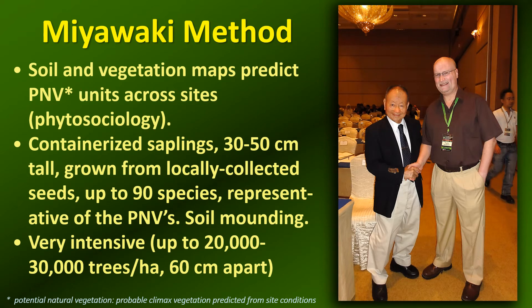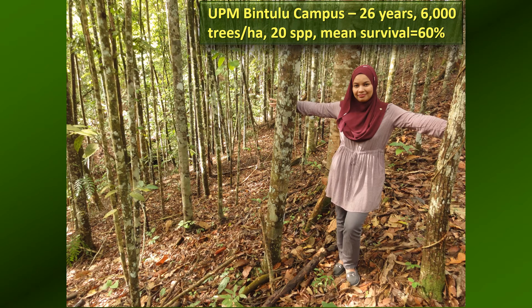Perhaps the best known of the maximum diversity techniques is the Miyawaki method, invented by Professor Miyawaki. His technique divides a restoration site into potential natural vegetation units based on soil and climatic conditions across the site, then matches species to those conditions. Saplings are grown in a nursery up to 30 to 50 centimeters tall and up to 90 species are planted on each individual site. The technique is very intensive and uses very high planting densities — up to 30,000 trees per hectare, or 60 centimeters apart. However, these very high tree planting densities could be regarded as overkill in some areas.